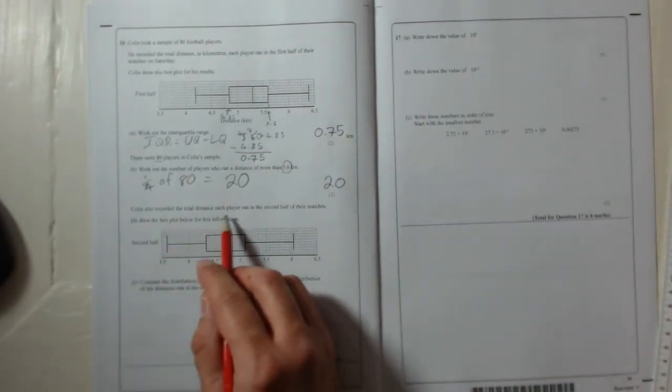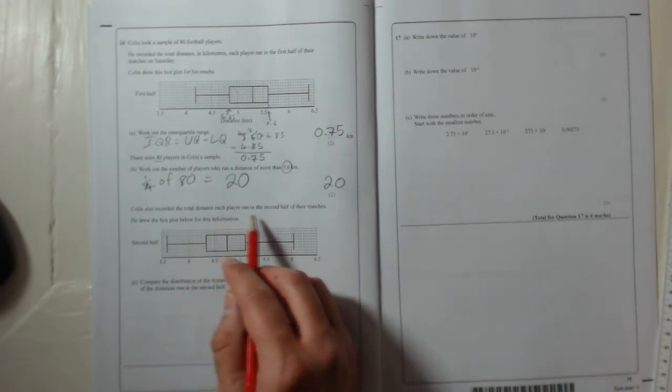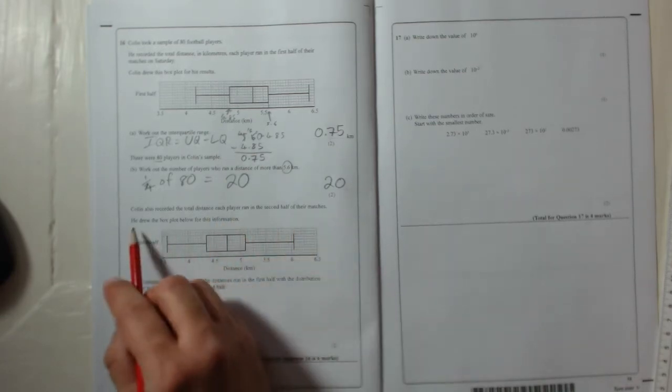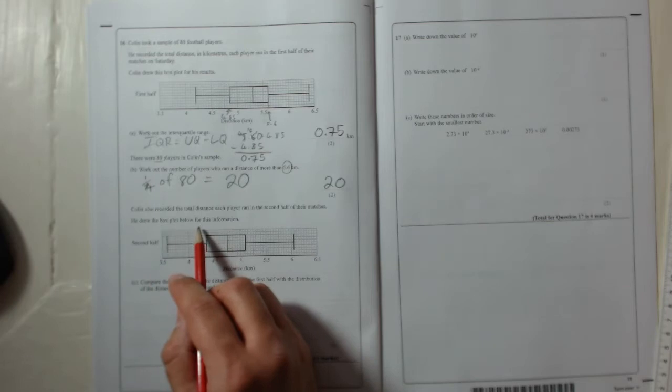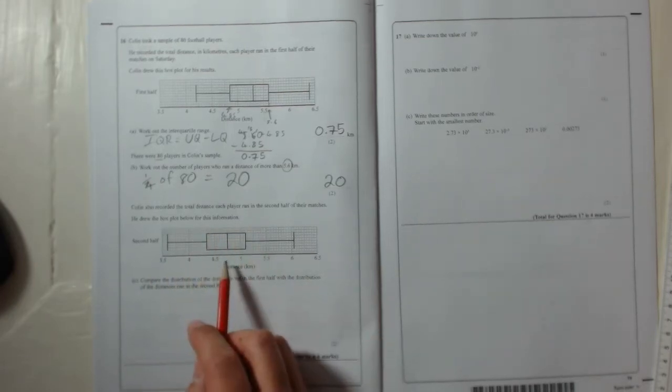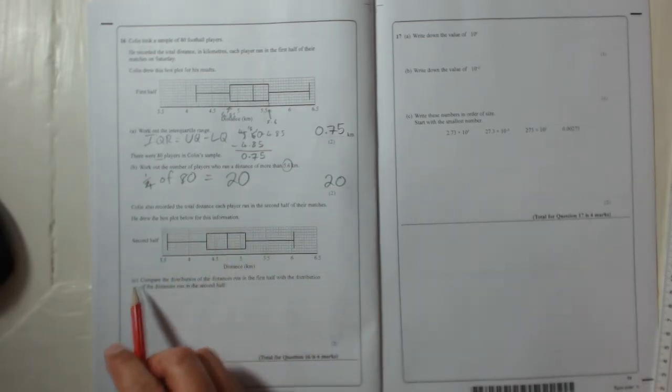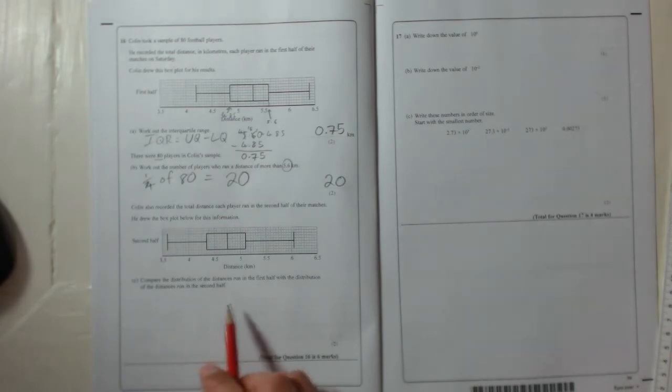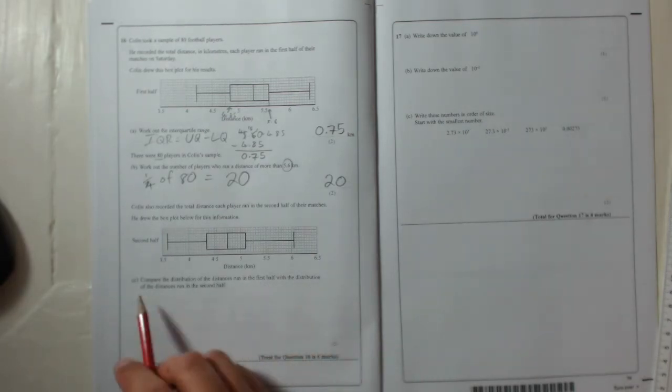Colin also recorded the distance each player ran in the second half of their matches. He drew the box plot below for this information, so here it is again. Part C: Compare the distribution of the distances run in the first half with the distribution of the distances run in the second half.